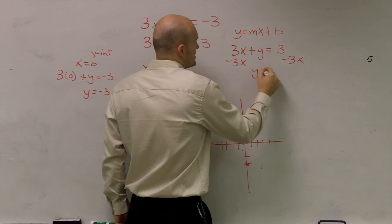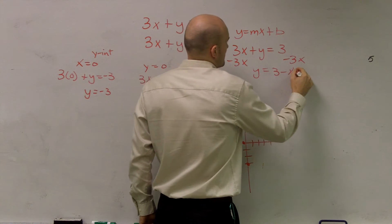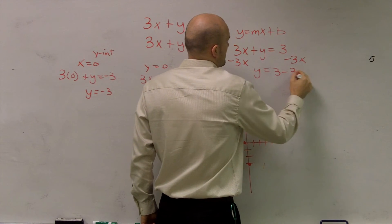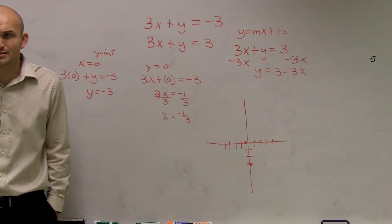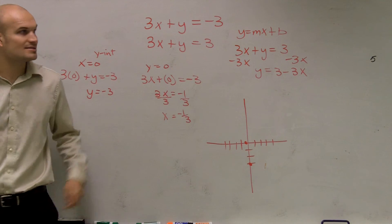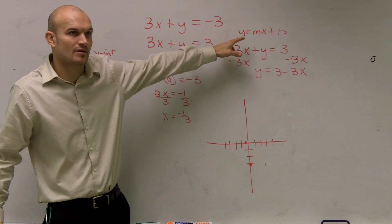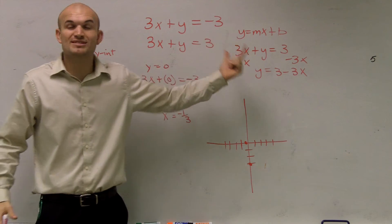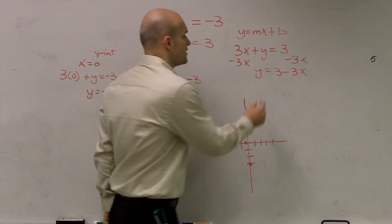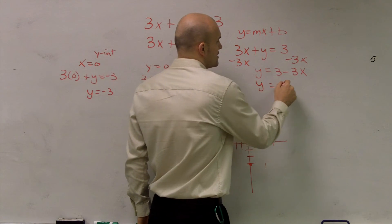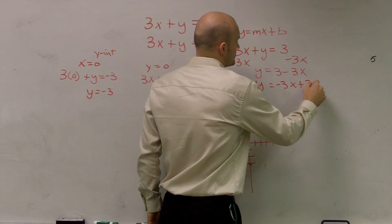And a lot of you get stuck because you write y equals 3 minus 3x, right? Well, guys, that's not in y equals mx plus b form. And I've told you from the start, when we started doing literal equations, to get used to the habit of putting your variables in front of your numbers. So you say y equals negative 3x plus 3.